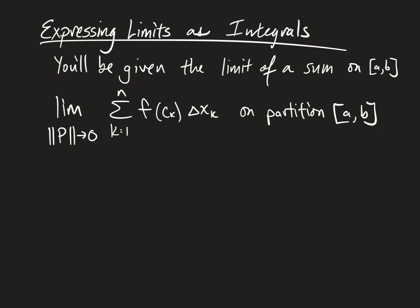And all you need to do in order to turn this into a definite integral is first, write your integration sign. Use the partition closed interval here to set your limits of integration, a and b. Replace all of the c sub k's that you see in the expression with x's, and replace the delta x sub k with dx. I'll do a couple examples on the next slide.